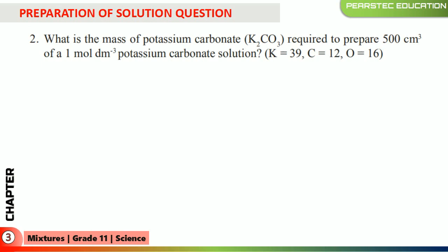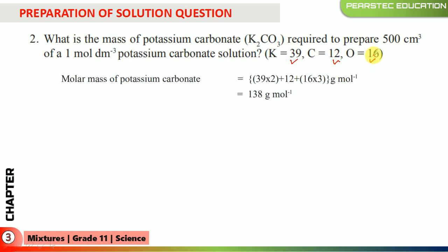Now this is a question about preparing a solution — very relevant to our previous lesson, but we are going to explain it as a revision. The question asks: what is the mass of potassium carbonate required to prepare 500 cm³ of a 1 mol/dm³ potassium carbonate solution? The molar masses are given individually. The molar mass of potassium carbonate is: K₂ = 39 × 2, C = 12, and 3 oxygens = 16 each, giving altogether 138 g/mol.